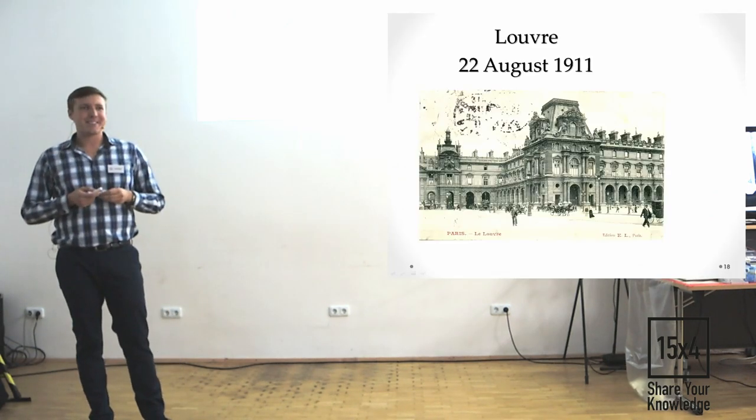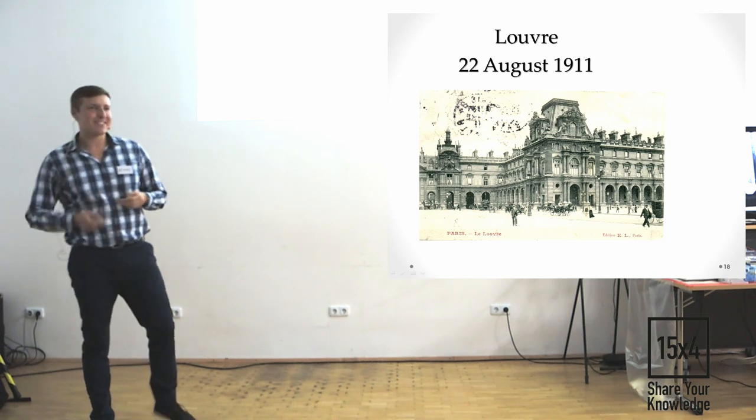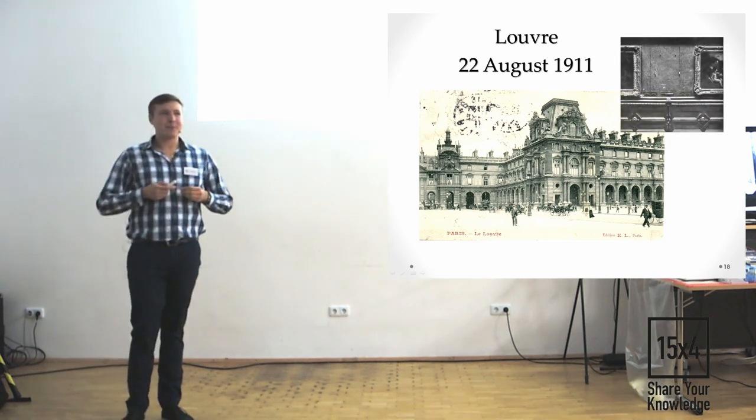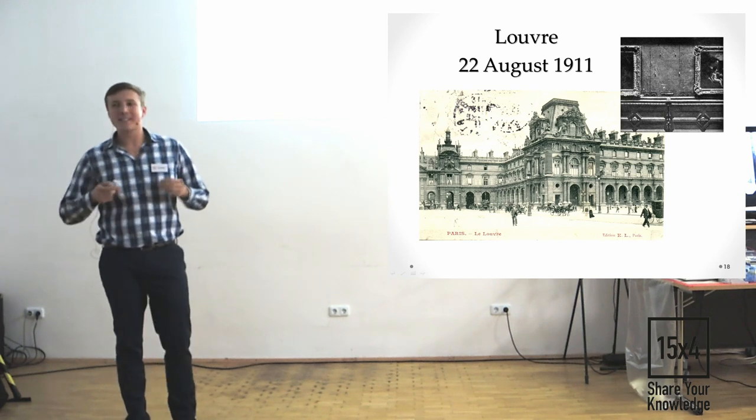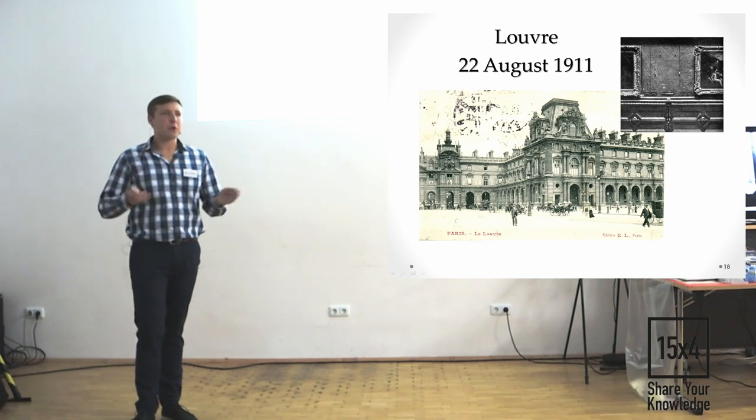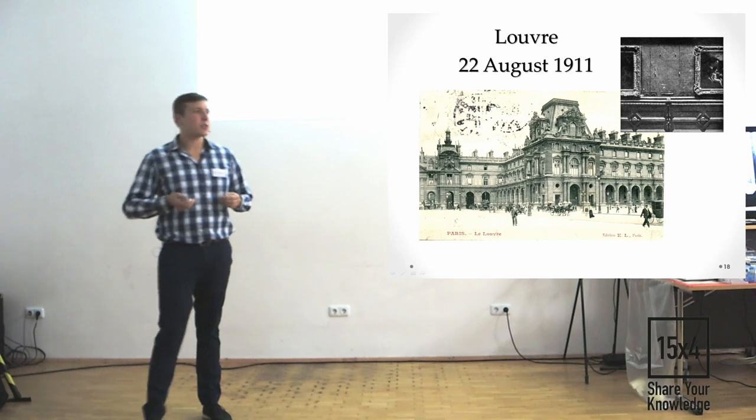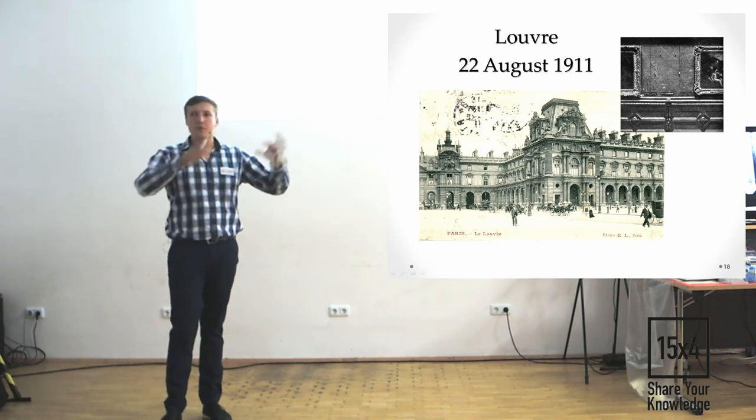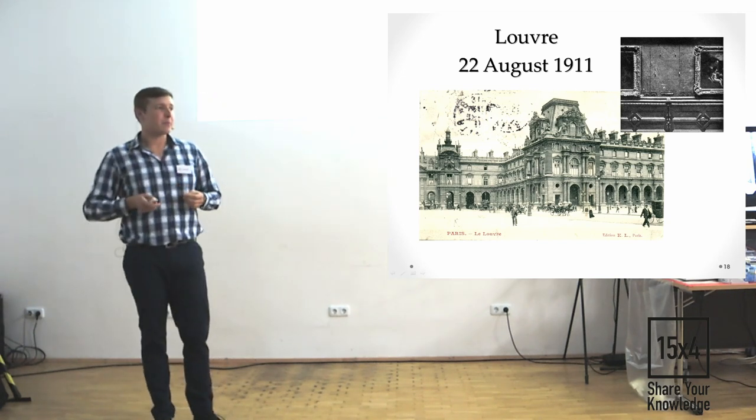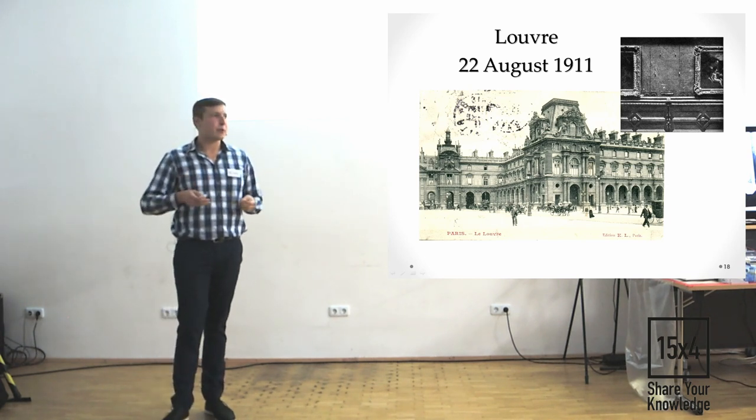22nd August 1911. Somebody knows what happened? One of these was stolen from the Louvre. This case was investigated by Bertillon. In that time, there was no records, at all no records for any restorers or photographers who just took a picture from a museum to work with them. Even authorities of the Louvre, they understood that the picture was stolen only in two days.